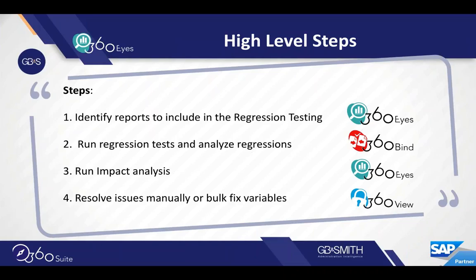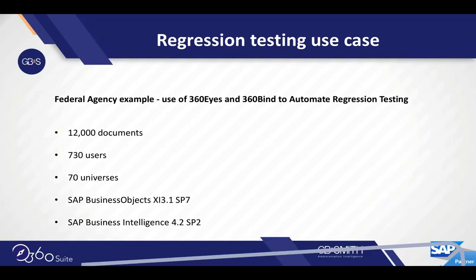We'll start with a use case. We have a federal agency that used 360Is and 360Bind to automate their regression testing. They had 12,000 documents in their environment, 730 users, 70 universes, and they were migrating from Business Objects XI 3.1 Service Pack 7 to 4.2 Service Pack 2.